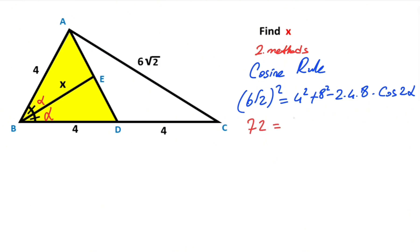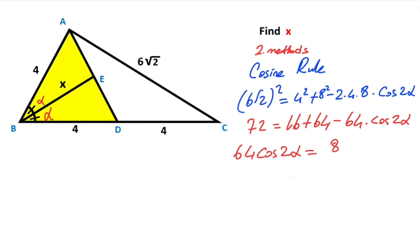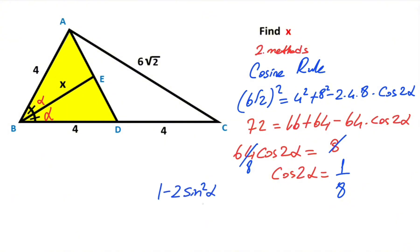So 72 equals 16 plus 64 minus 64 times cosine 2 alpha. Therefore 64 cosine 2 alpha equals 8, giving cosine 2 alpha equals 1 over 8. We know the expansion of cosine 2 alpha equals 1 minus 2 sine squared alpha equals 1 over 8.